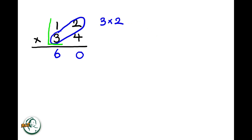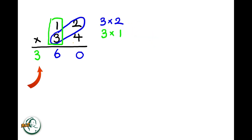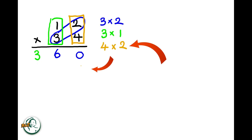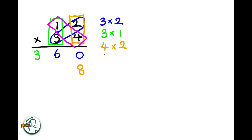Next, we multiply three by one, resulting in three. Moving on to the other number, four multiplied by two equals eight. And four multiplied by one is four.